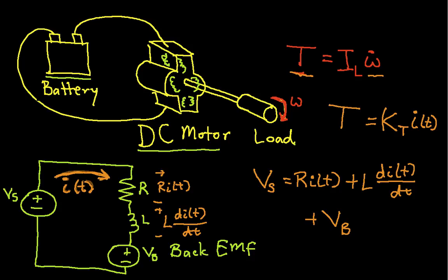Okay, so we're getting close. The last thing we need to do before we start trying to put this all together is figure out what V sub B is. Well, it turns out that V sub B is equal to a constant, which we'll call K sub B, times the angular velocity of the load.